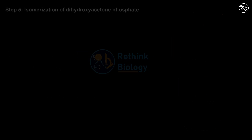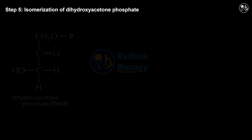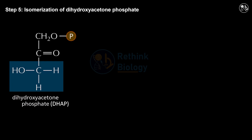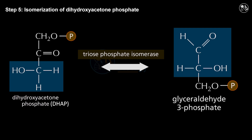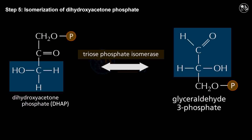Step 5: Isomerization of dihydroxyacetone phosphate. In this step, the enzyme triose phosphate isomerase converts dihydroxyacetone phosphate into glyceraldehyde-3-phosphate, which is a substrate needed for the next step of glycolysis.